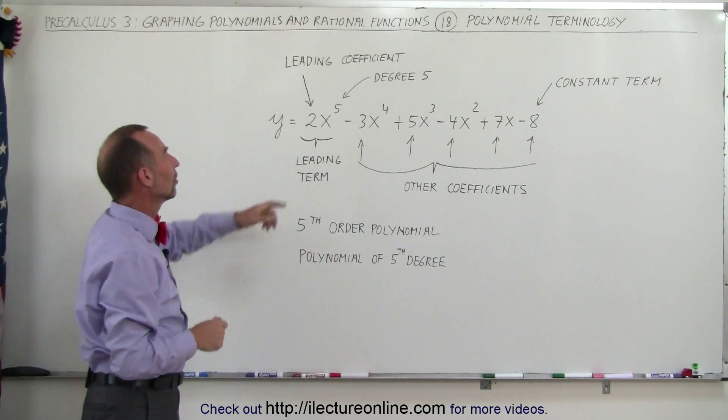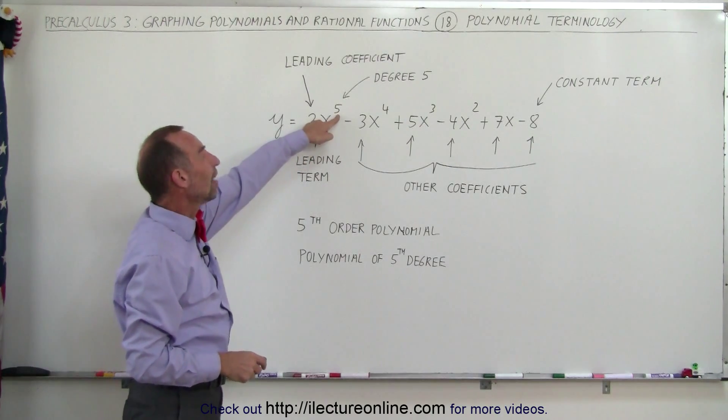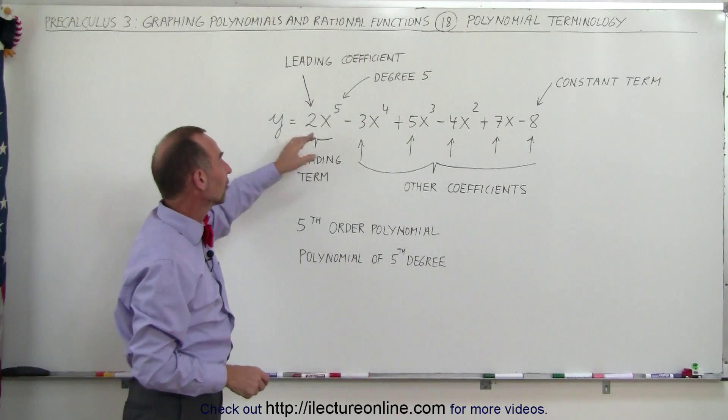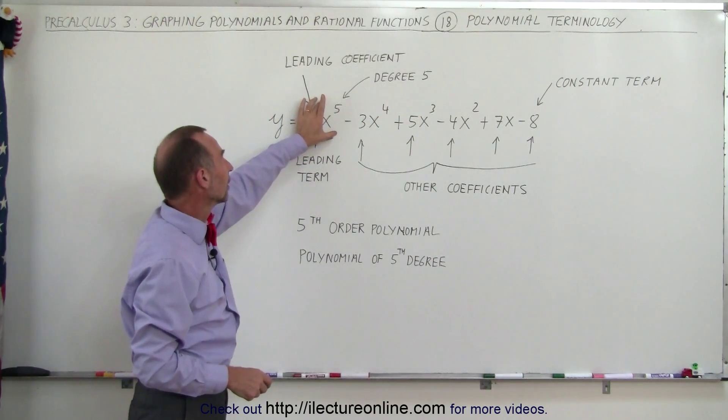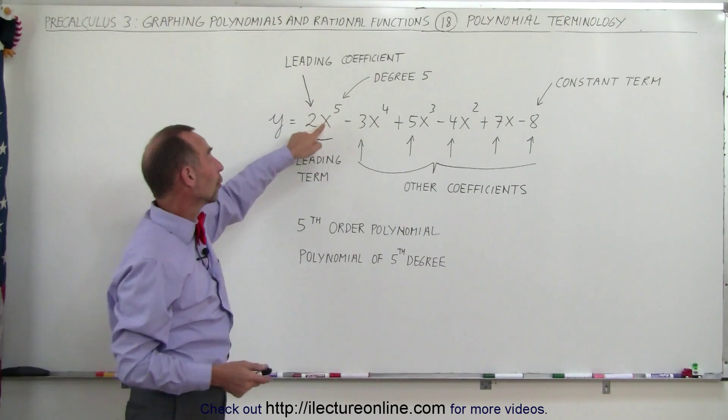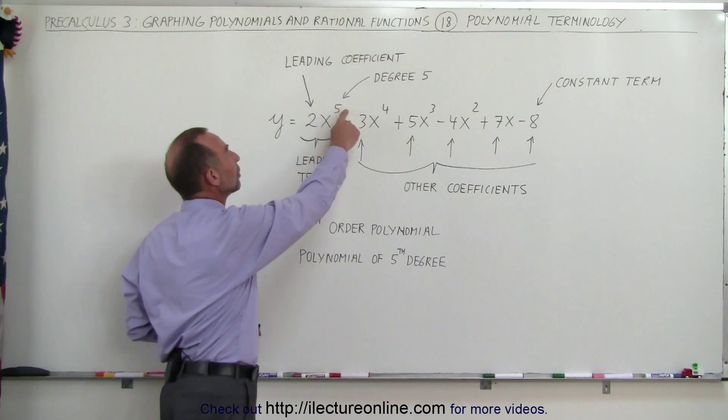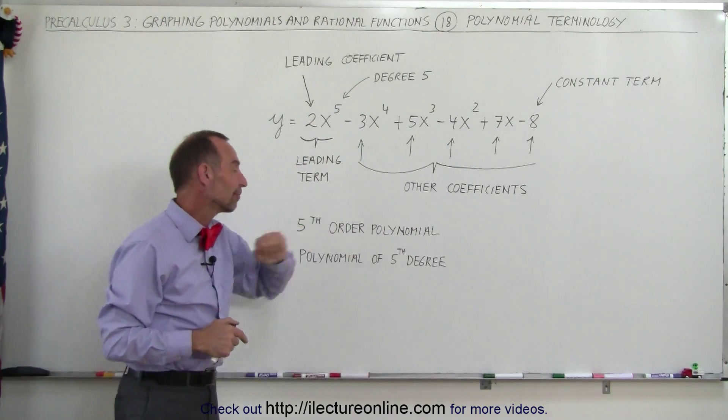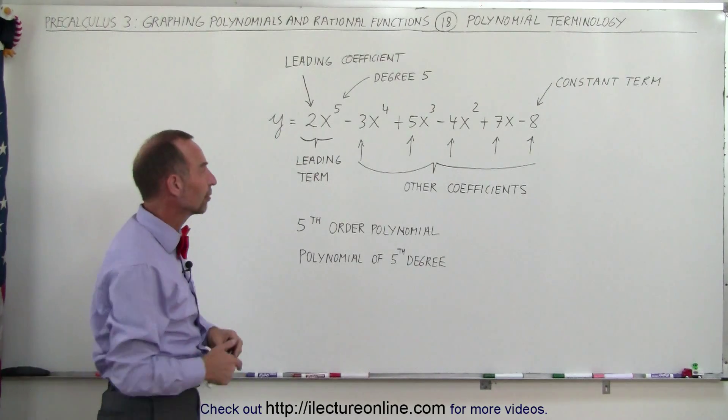We can also say that this is degree five, so this is degree four, degree three, and so forth. But in this case, since the leading term has a five as an exponent over the variable, we can say this is a degree five polynomial, or we can also say this is a polynomial of the fifth degree, or of a fifth degree.